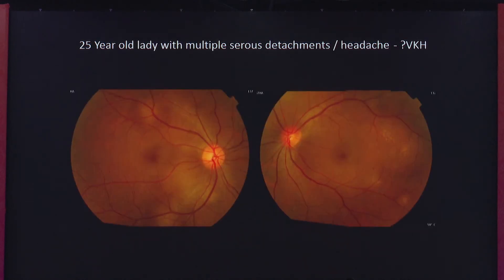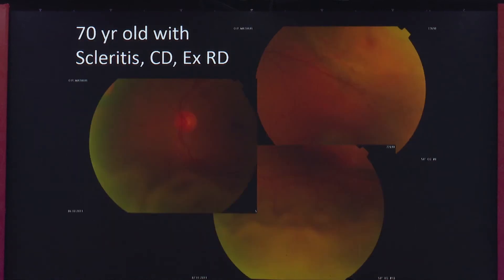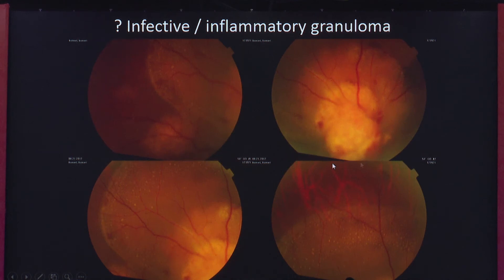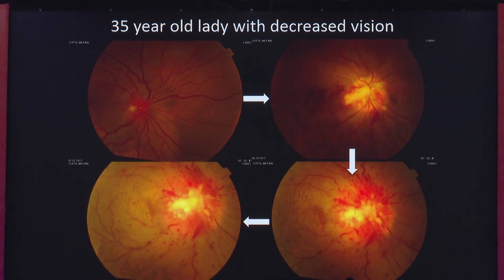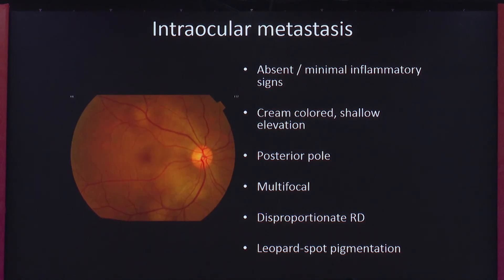Let me show a series of four patients. A 25-year-old lady presented with multiple sero-sanguinous detachments in both eyes and headache — probably VKH. A 70-year-old gentleman presented with scleritis in the supero-temporal quadrant with an exudative choroidal detachment and an inferior retinal detachment. Another lady had something like an inflammatory granuloma overlying the optic disc with exudative retinal detachment. And one patient had a small lesion that grew in size, causing a combined central retinal artery and vein occlusion, leaving the patient with no light perception. What is common to all four patients is that all of these are intraocular metastases.